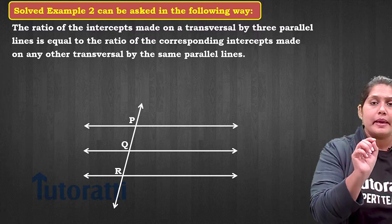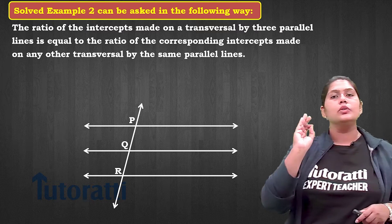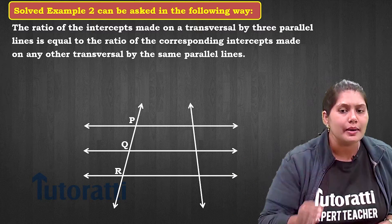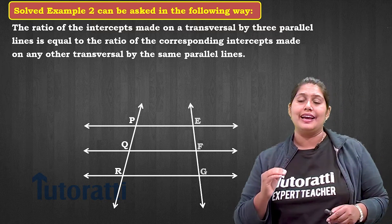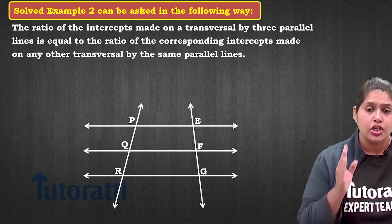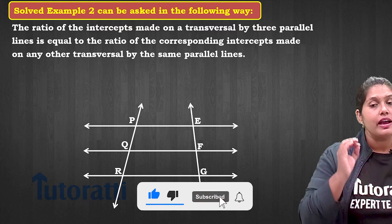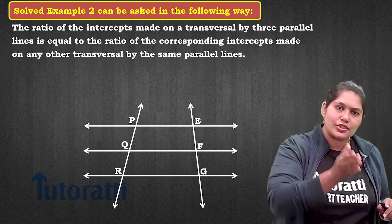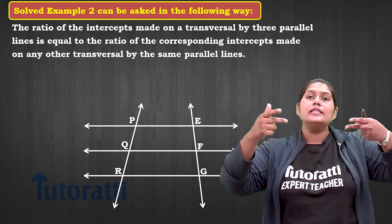The statement says the ratio of the intercepts made on a transversal by three parallel lines is equal to the corresponding intercepts on another transversal. So I will have one more transversal intersecting the three parallel lines at three distinct points — let's say E, F, and G. The intercepts formed on the right-hand side are EF and FG.